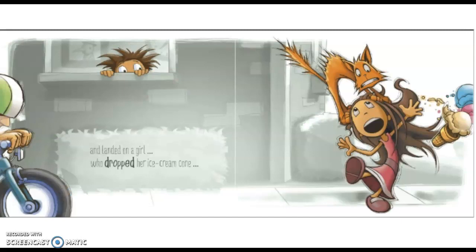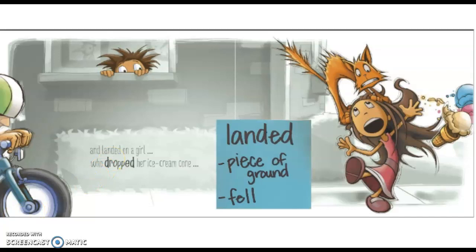The next part I was a little bit tricked on was this page: 'And landed on a girl who dropped her ice cream cone.' The word landed tricked me a little bit. I know that land can mean a piece of ground and it can also mean to fall. I'm wondering what it means in this one, so I might want to reread it and try both to see which one would make sense. 'And landed on a girl' — it's definitely not talking about a piece of ground. The cat did land, or fall, on the little girl's head. That must be what it means in this part of the book.